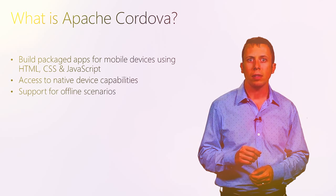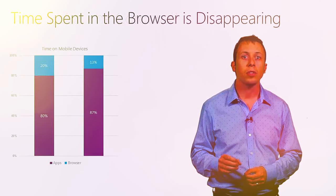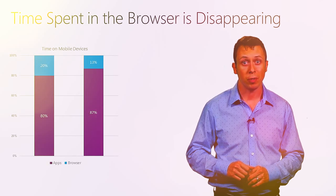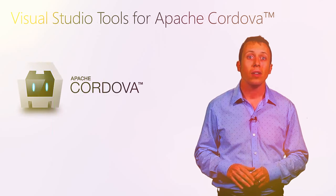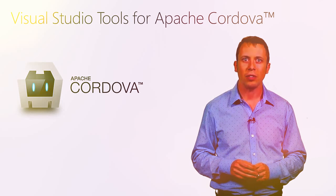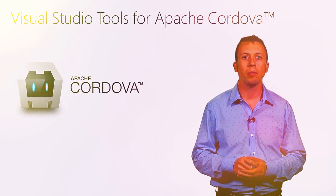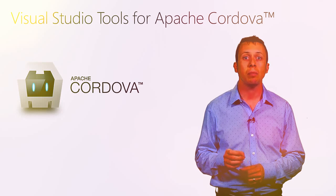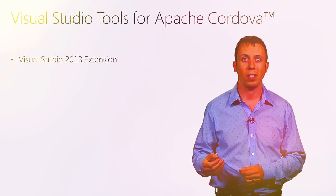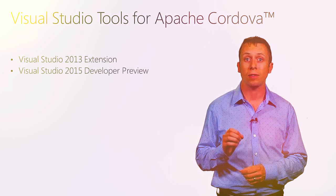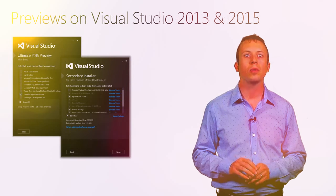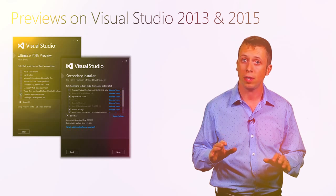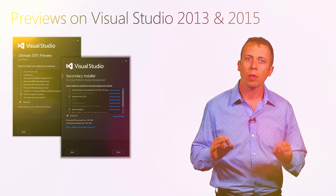Unlike web apps, packaged apps give you access to native device capabilities like the camera or file system, support for offline scenarios, and the opportunity for monetization in the app stores. They also solve an important discoverability problem as more consumers choose to engage with apps on mobile devices rather than the browser. Since we first announced Visual Studio support for Apache Cordova at TechEd in June, thousands of developers have used these tools to build packaged apps for iOS, Android, and Windows.